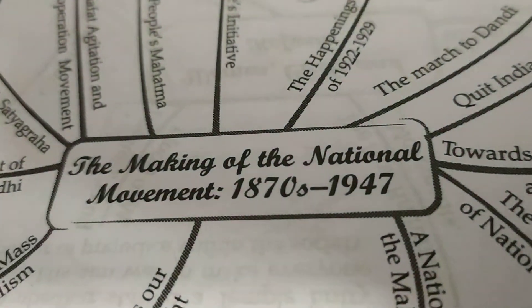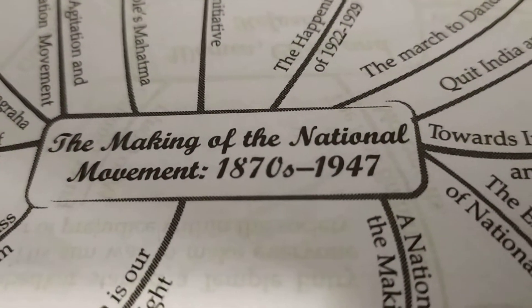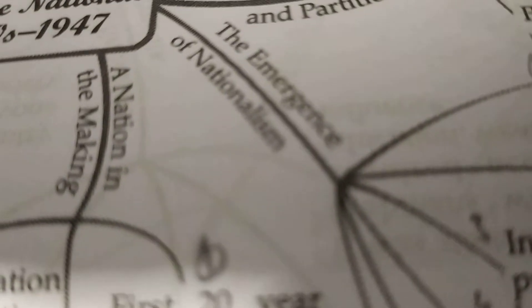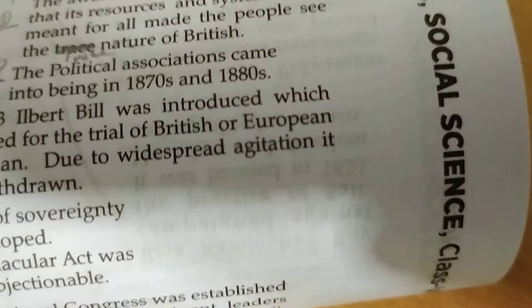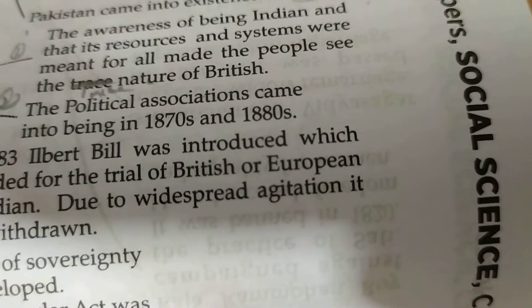We will be reading about the making of the national movement in the 1870s and 1880s. The first topic is the emergence of nationalism. The awareness of being Indian, and that society and the system were meant for all, made the people see the true nature of the British.